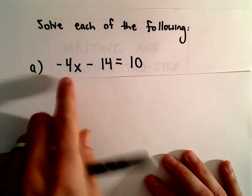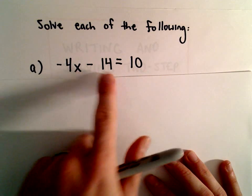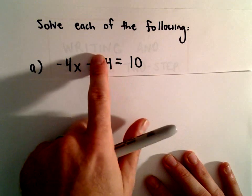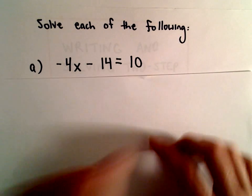So if there are other x's, I'll try to combine them. So on the left side, I see two terms. I see one involving x, and then I see just a number, and then on the other side, I see just a number.